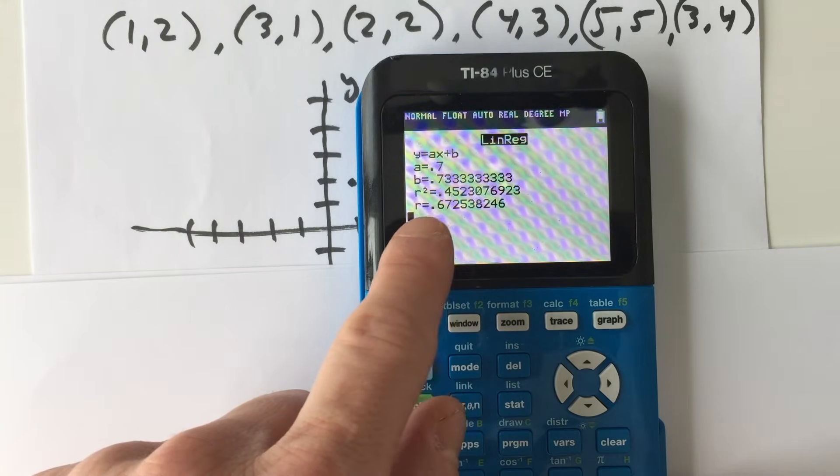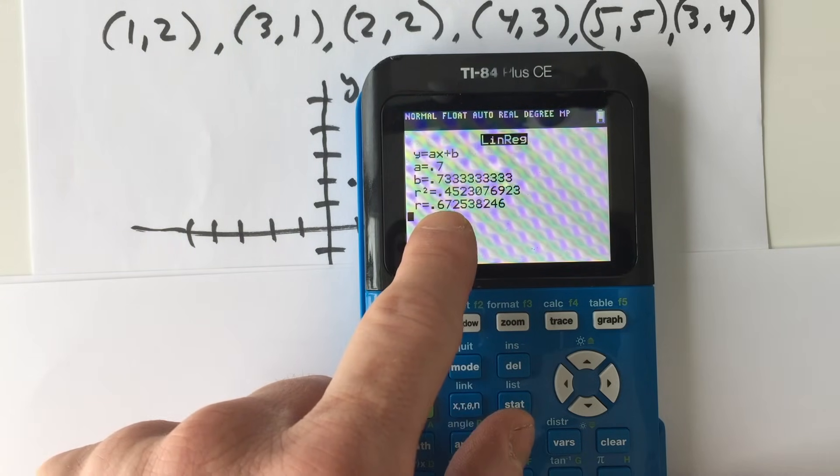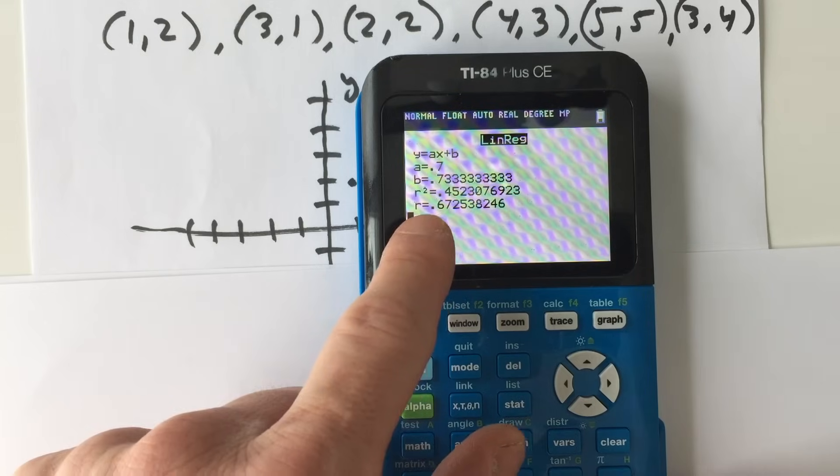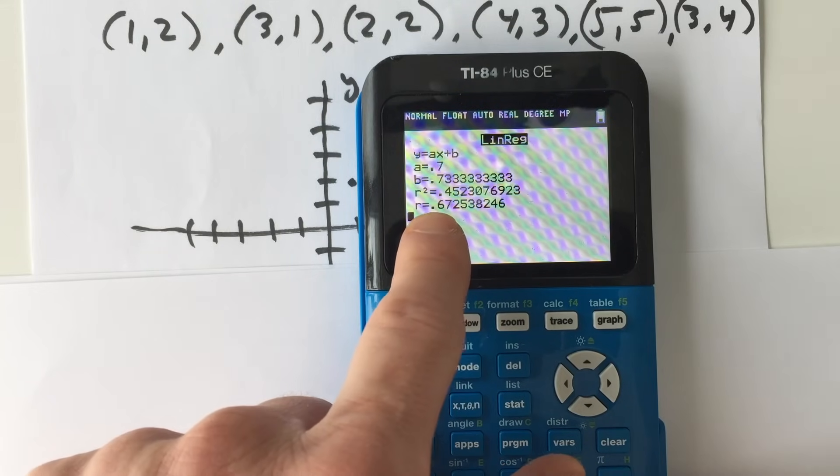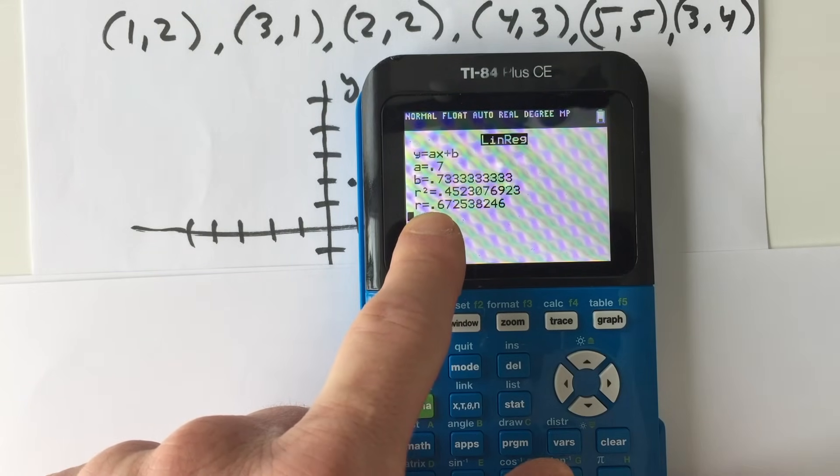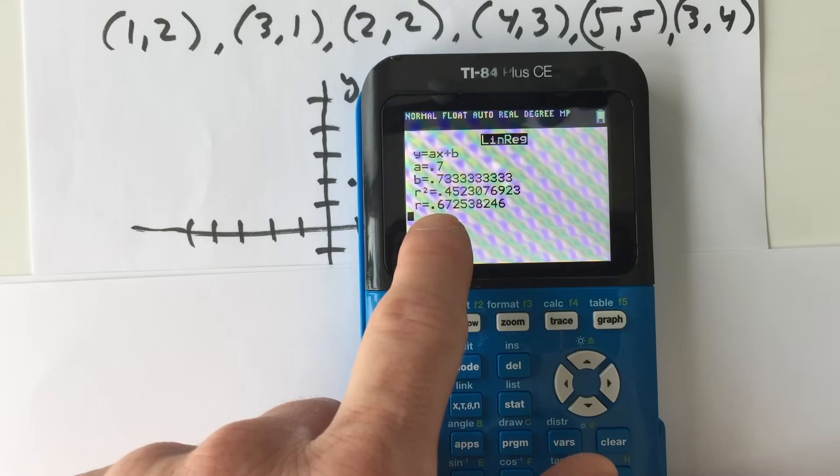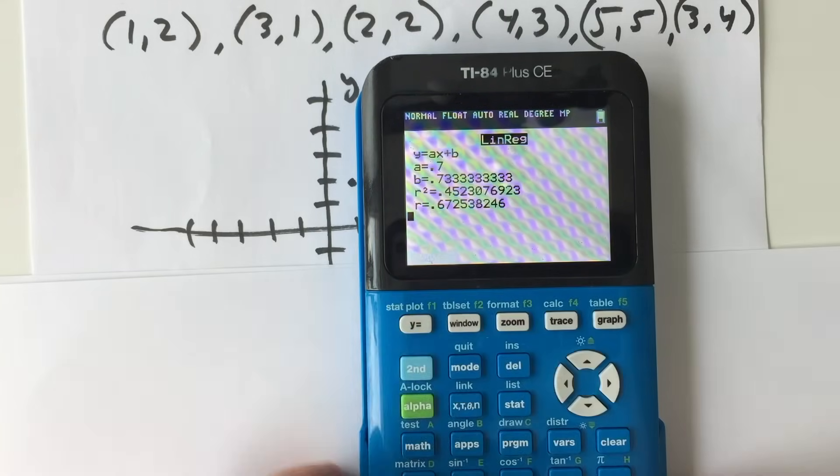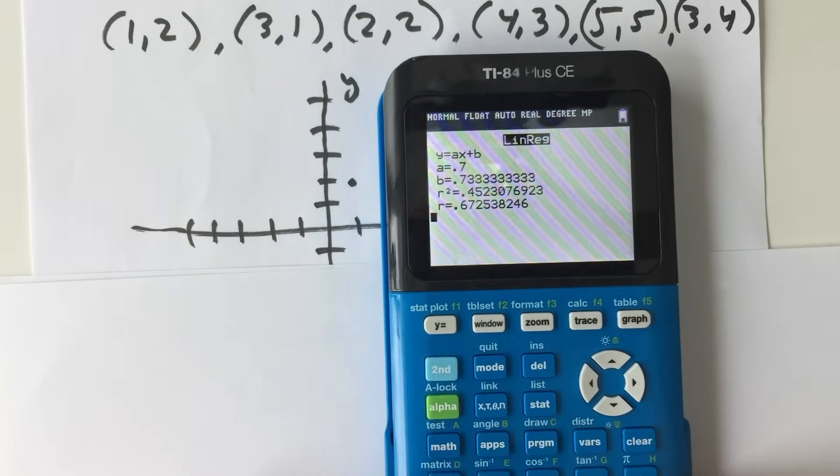And then R here is our correlation coefficient. So that's how closely those points lie on the line. The closer this number gets to 1 or negative 1, you can just take the absolute value of this number, but the closer it gets to 1, the better that the points are exactly on that line of best fit.